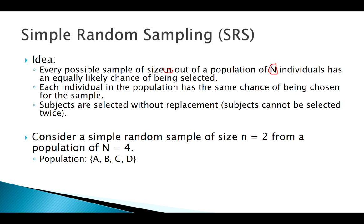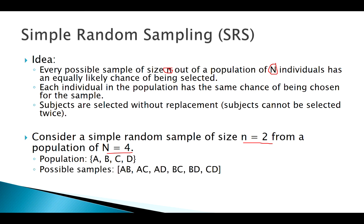Say my population is big N equal to 4 — so A, B, C, D — and I decide I want a sample size of 2. What are all my possible samples of size 2? It could be AB, AC, AD, and so forth — there are actually six possible samples. I might put all six in a hat and choose one — that's my random sample.